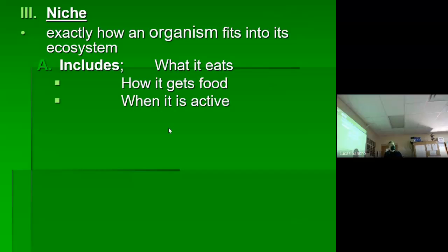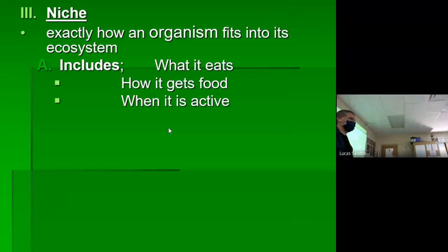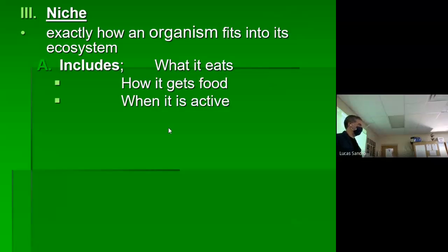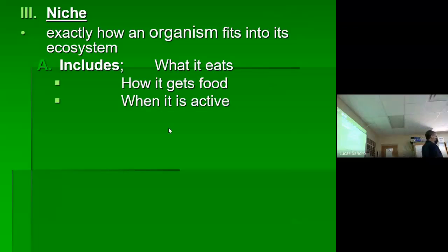When is the organism active? Is it at night — what do we call that? Nocturnal. During the day — what do we call that? Diurnal. And there's a word for being active just at dawn and dusk: crepuscular. I never thought I'd see that word in everyday life outside of science, but I was playing a video game and the settings said 'crepuscular rays' — probably for sunsets when they require extra computing power.